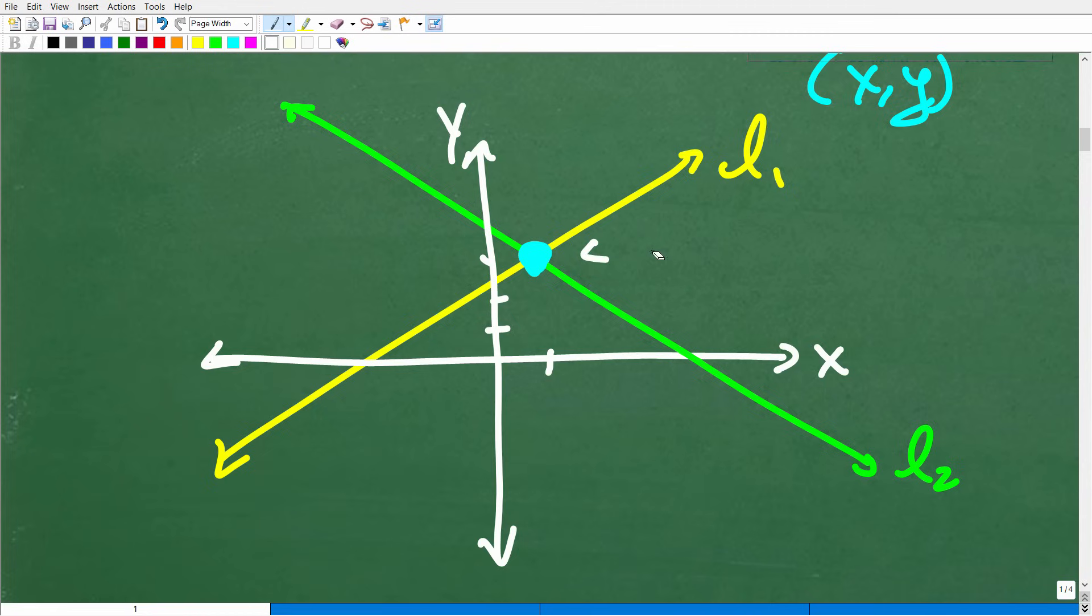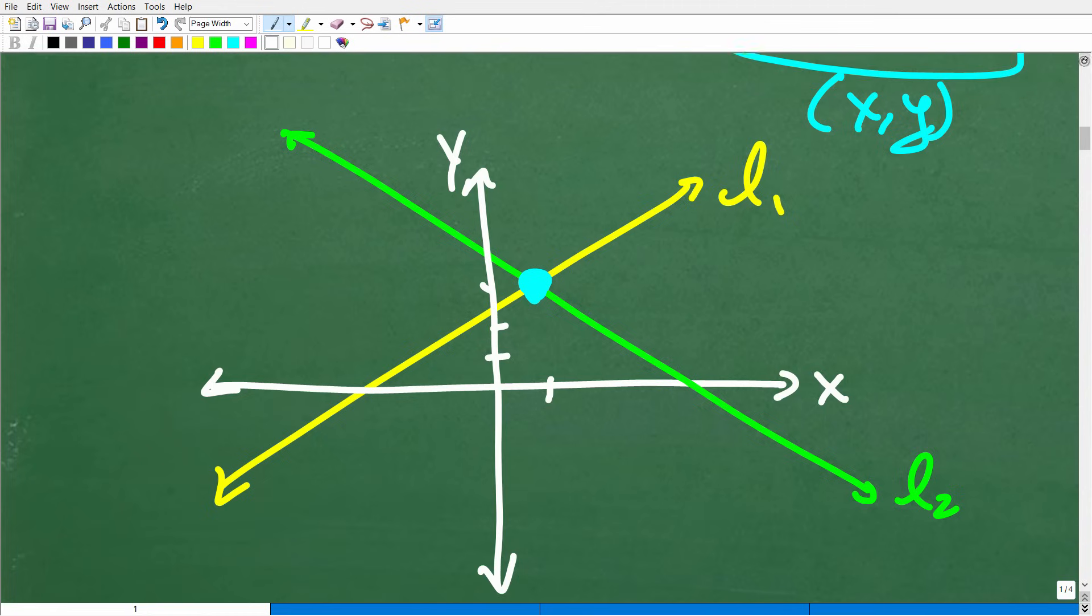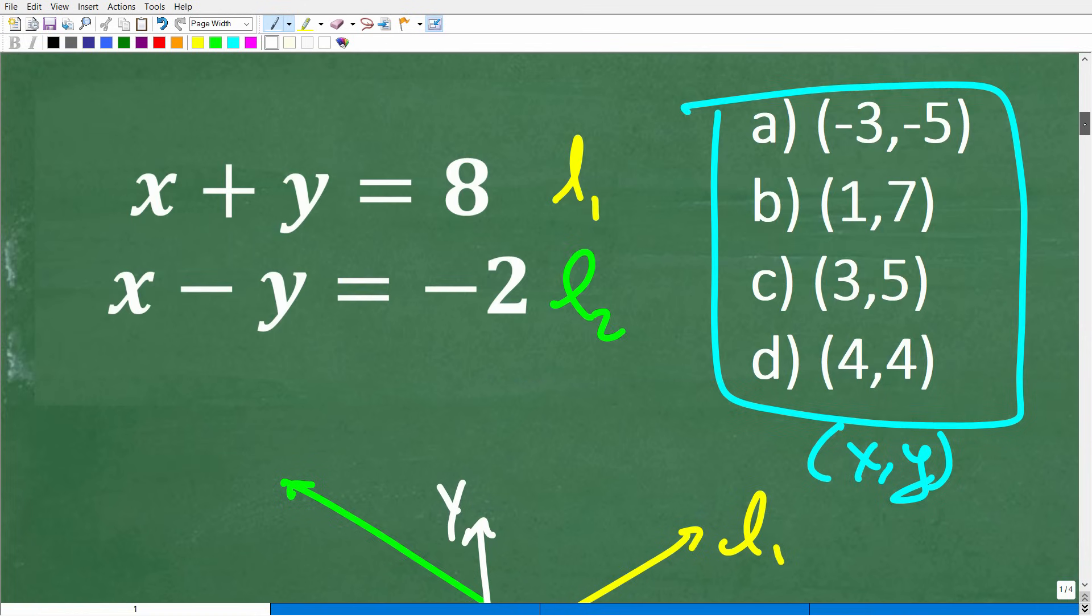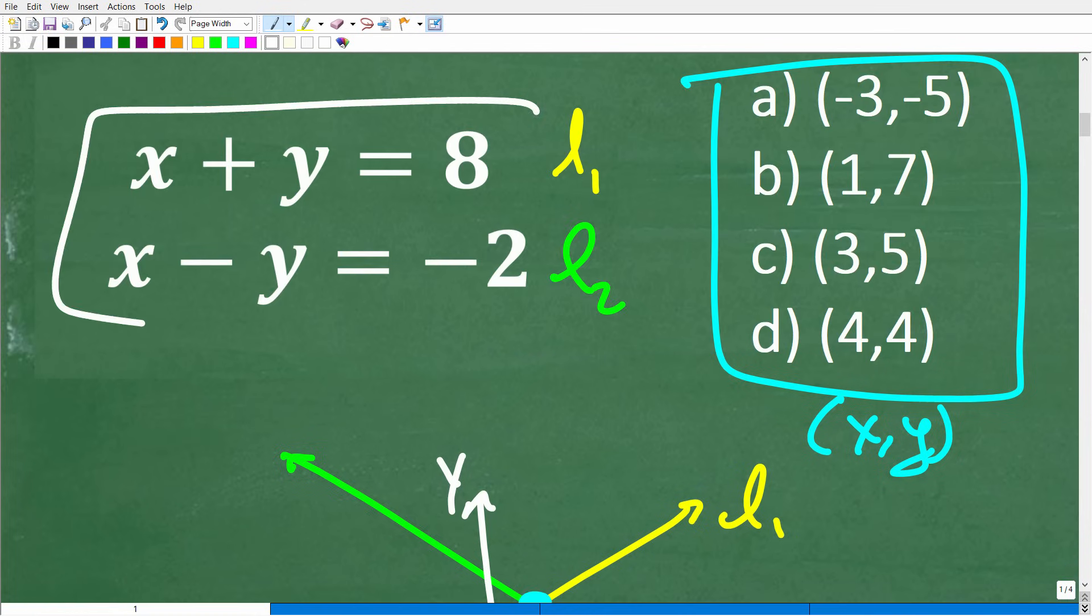All right. So the whole idea behind solving a system, a two-variable linear system, is to effectively try to find the point of intersection. In other words, I'm going to graph this line, graph this line. And where these two lines intersect is the solution, okay? So in this case, our answer is c, three, five.